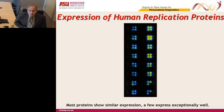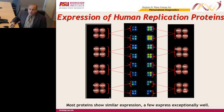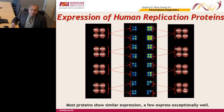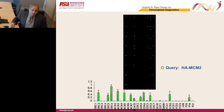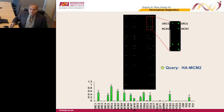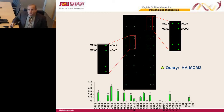Here is one of our first published arrays — an array of the DNA pre-replication complex proteins, with every protein printed in duplicate. Once the array is printed, we can probe it with another protein to see which proteins it binds to. In this case, we co-printed the MCM2 protein along with all the other proteins on the array, and you can see that MCM2 binds to ORC5, ORC6, MCM3, MCM5, and MCM7.